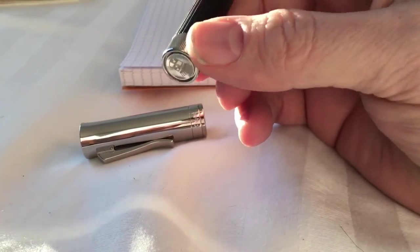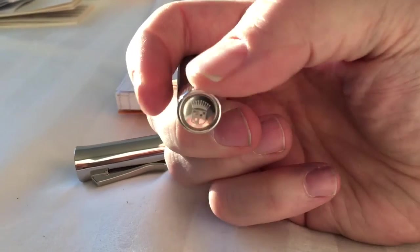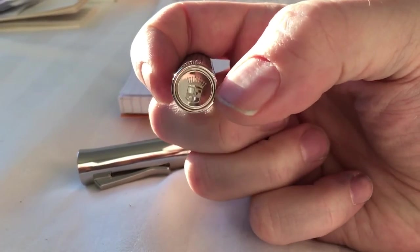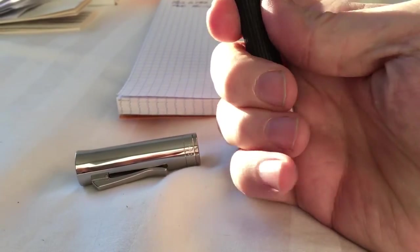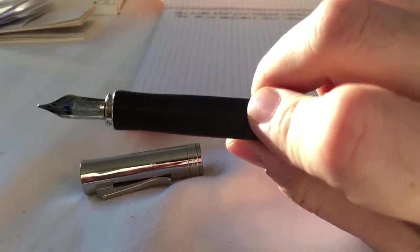On the back here you've got this little knurled back part, and then you've got the Faber-Castell crown on the back. I apologize, my hands are a little dirty—I was doing some work so my fingernails look bad.